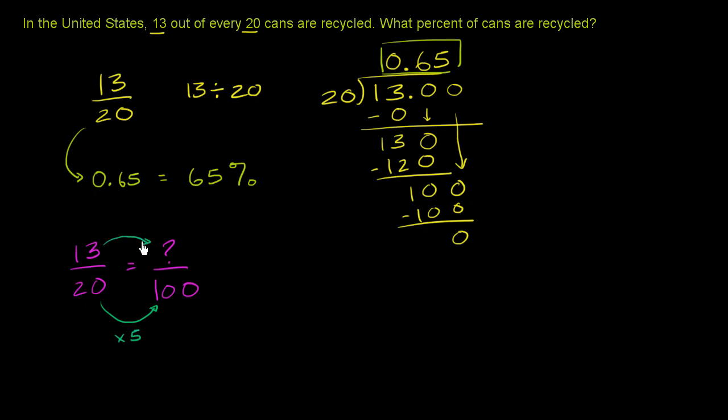So let's multiply the numerator by 5 as well. And 13 times 5, let's see, that's 15 plus 50, which is 65. So this would have been a little bit of a faster way to do it, especially if you recognize it's pretty easy to go from 20 to 100. You multiply by 5. So we would do the same thing with the 13.